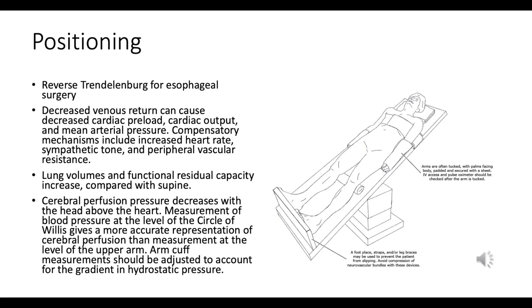Blood pressure measurement in reverse Trendelenburg: it is more accurate to measure blood pressure at the level of the circle of Willis. If using an arm cuff, readings may need to be adjusted to account for the gradient in hydrostatic pressure caused by the difference in height between the arm and the brain.